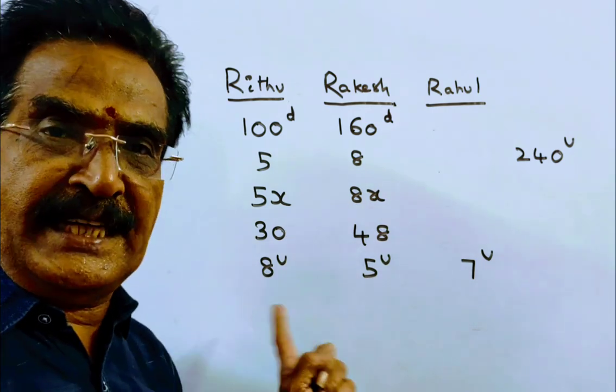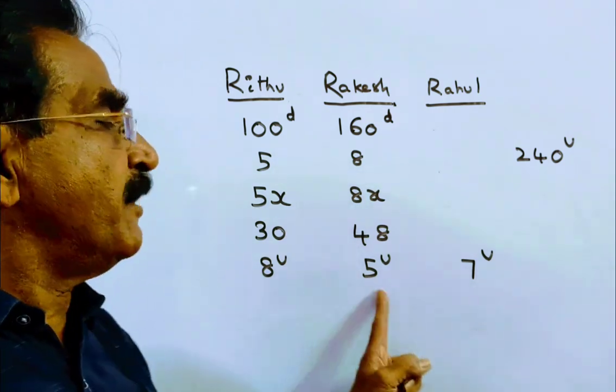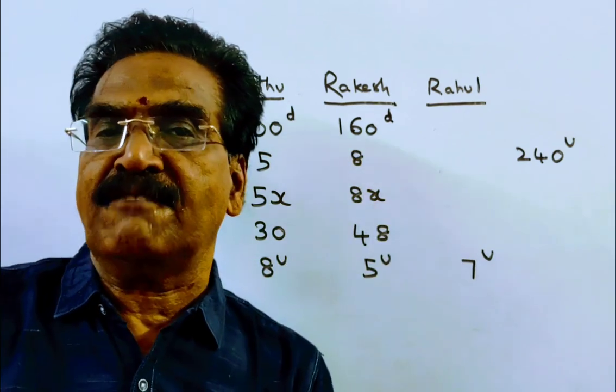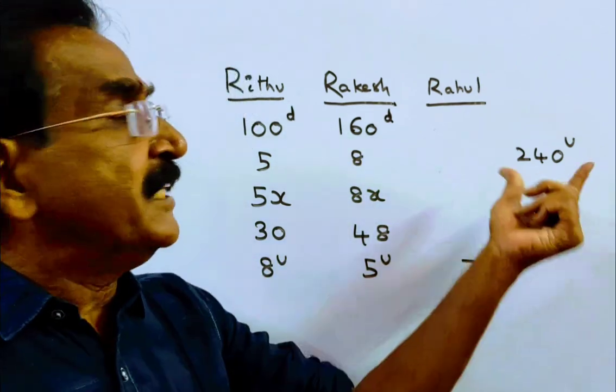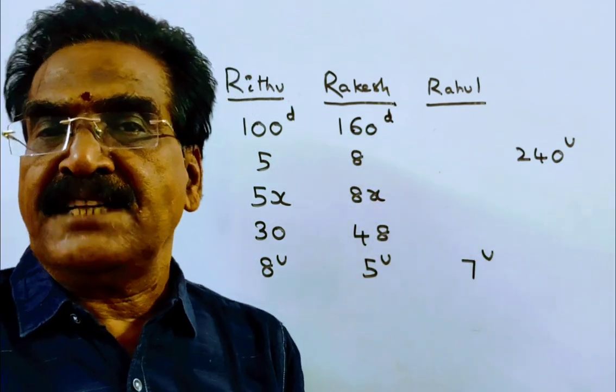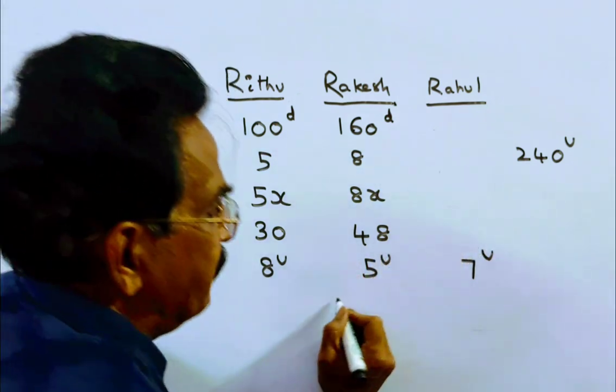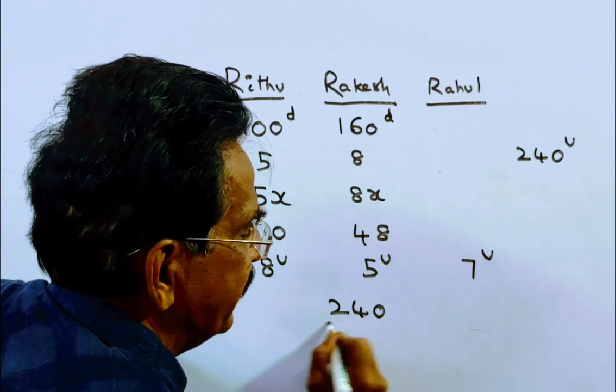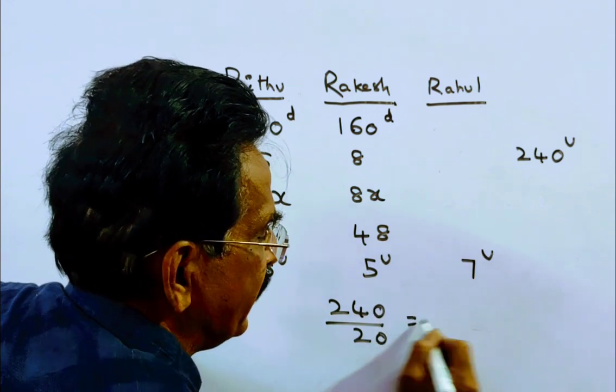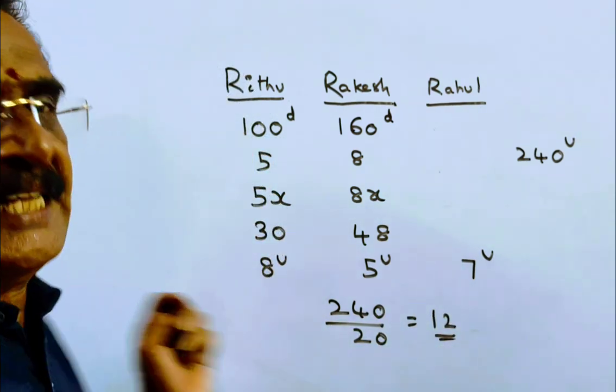Friends, now if all the three together work, 8 plus 5 plus 7, 20 units of work can be completed per day. The total work is 240 units. Friends, if all the three together work, then the total work can be completed by 240 by 20, 240 by 20, 12 days. Friends, 12 days is your answer.